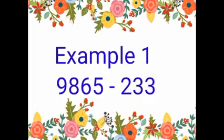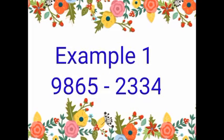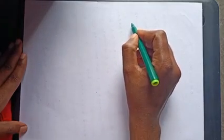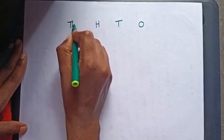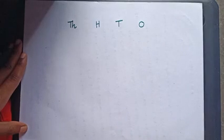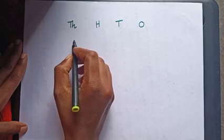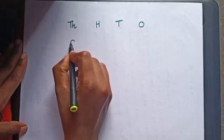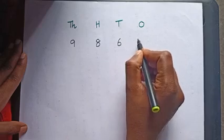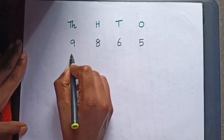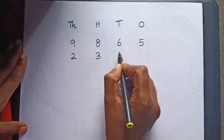Look at this example: 9865 minus 2334. First we have to write the place values - ones, tens, hundreds, thousands. And write the given numbers: 9,865 and 2,334.